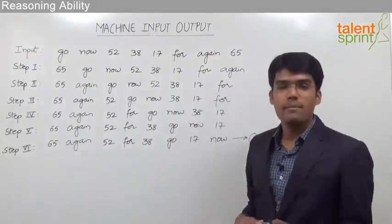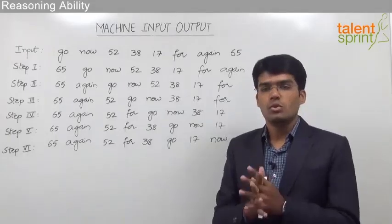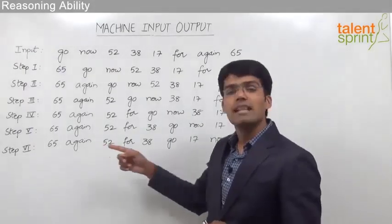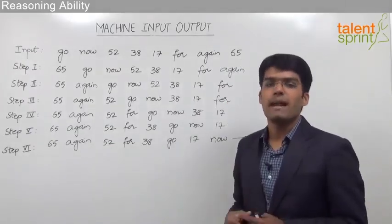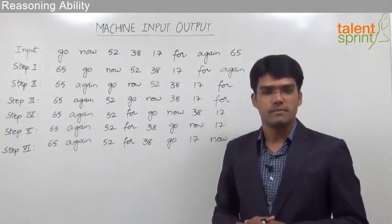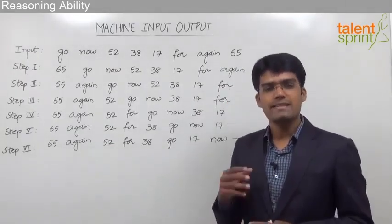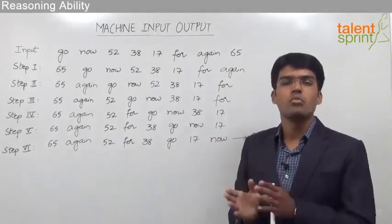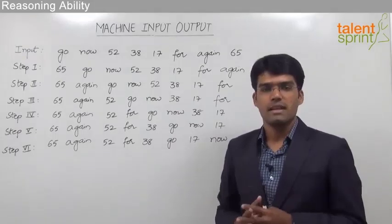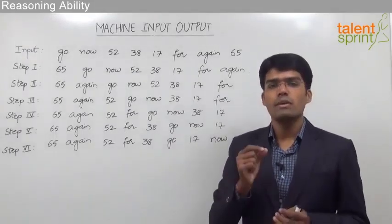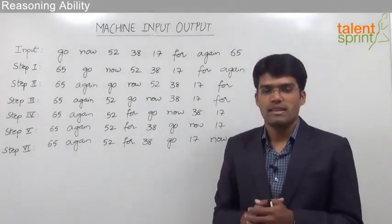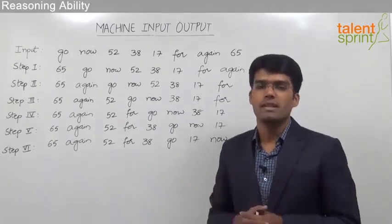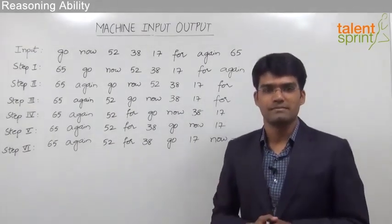From this example, we have understood that to crack the logic behind rearrangement, you first need to observe the last step and decide the pattern among the numbers and words. Once that is done, look at the step-by-step procedure and understand the movement of words and numbers. Remember: in each step only one element is moved, and if something is already in its correct place, we simply move on to the next element.